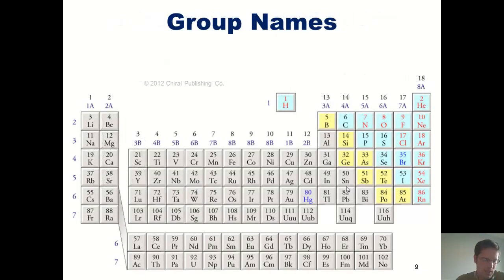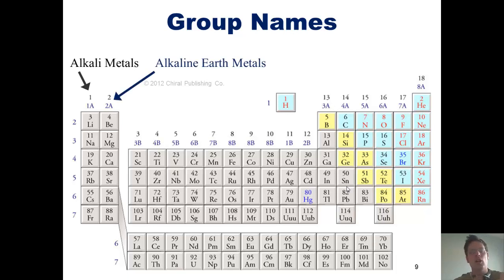We'll now continue. Each group or column on the periodic table has a different name. That being said, there are four specific group names that I require you, my students, to memorize. These names are the alkali metals, which are the elements in column or group 1A, the alkaline earth metals, which are found in column or group 2A, the halogens, which are column or group 7A, and the noble gases, which are column 8A.